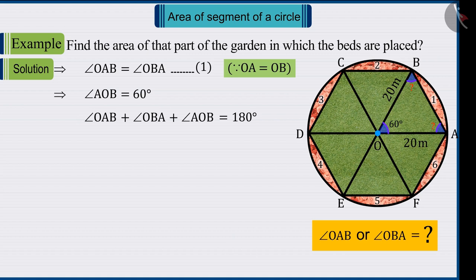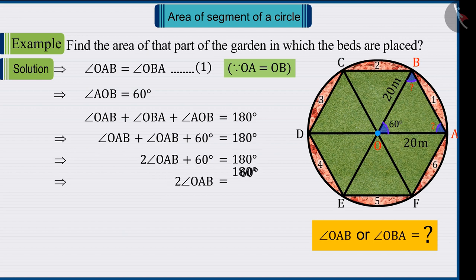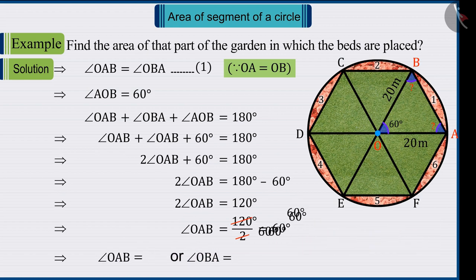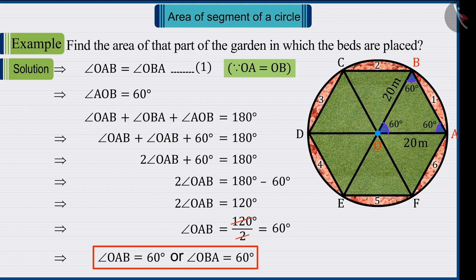Absolutely correct. Since we know that the sum of all angles of a triangle is 180 degrees, therefore the value of angle OAB or OBA will be 60 degrees.